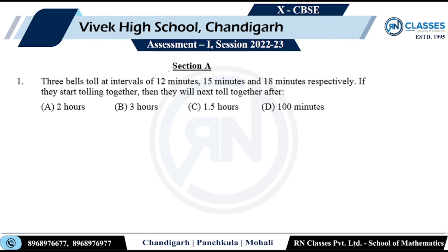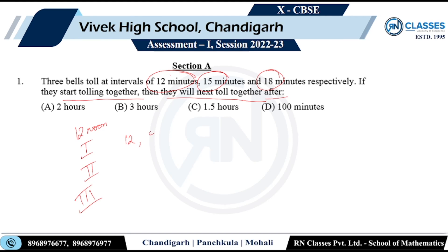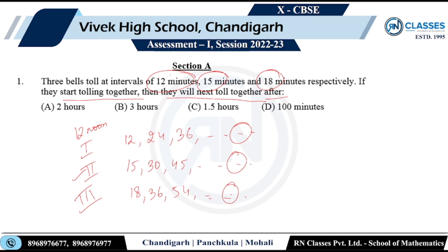The three bells toll at intervals of 12 minutes, 15 minutes, and 18 minutes respectively. If they start tolling together, when will they next toll together? Suppose at 12 noon they toll together. The first one tolls again after 12 minutes, then 24, 36, and so on. The second tolls at 15, 30, 45 and so on. The third at 18, 36, 54 and so on. For them to toll together, the time must be the same — I'm looking for common multiples of 12, 15, and 18.